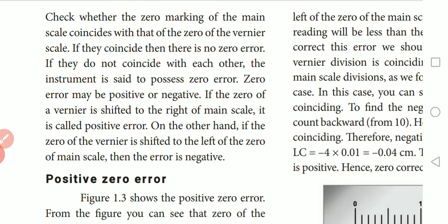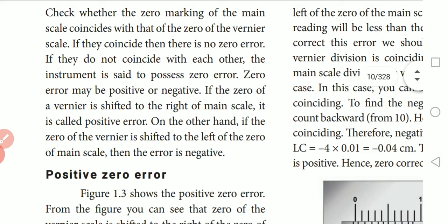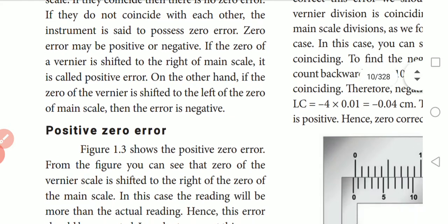First, check whether the zero marking of the main scale coincides with the zero of the vernier scale. If they coincide, then there is no zero error. But if they do not coincide, a zero error is present and must be corrected.